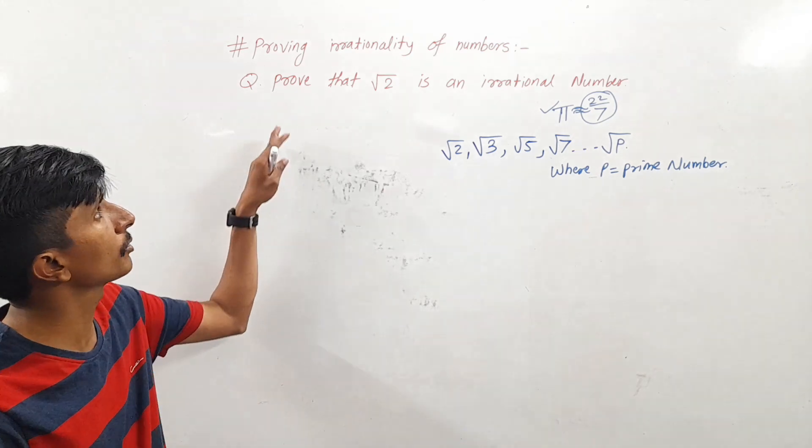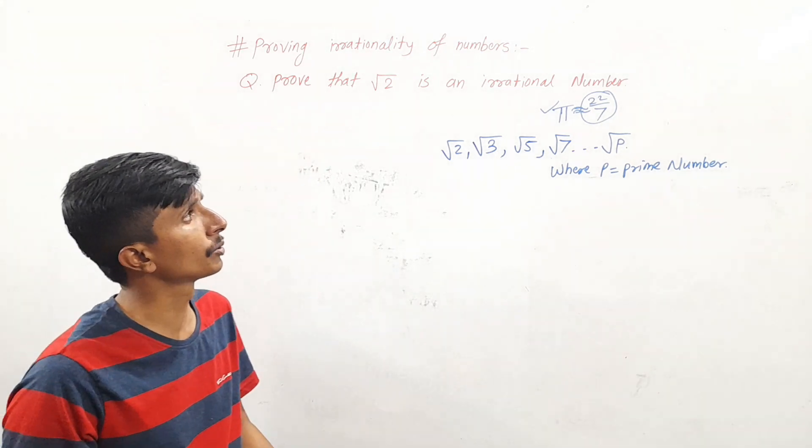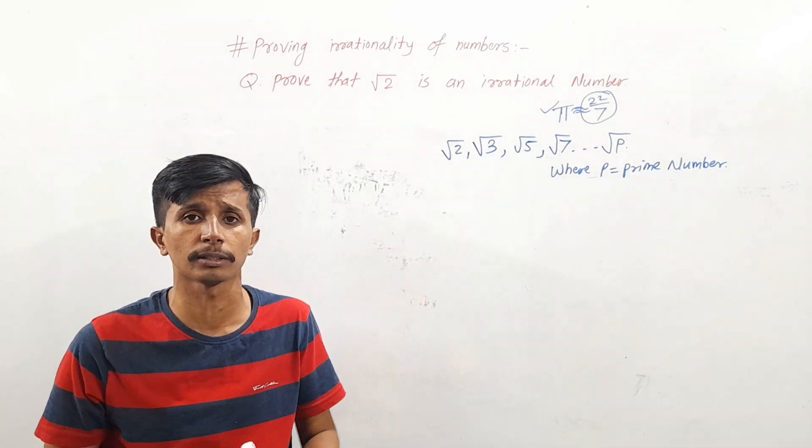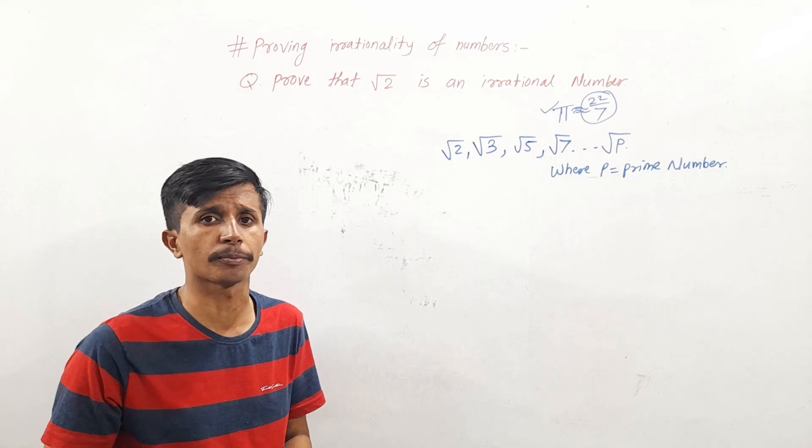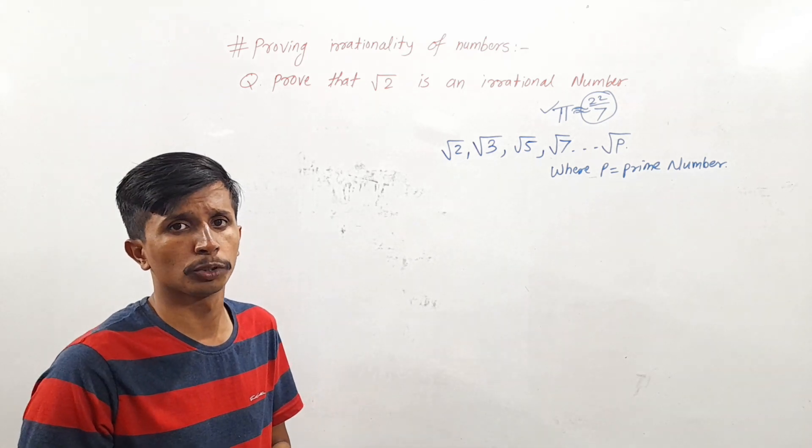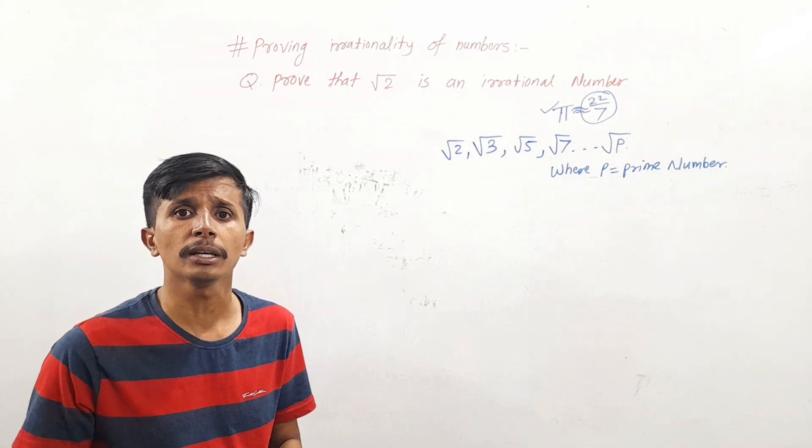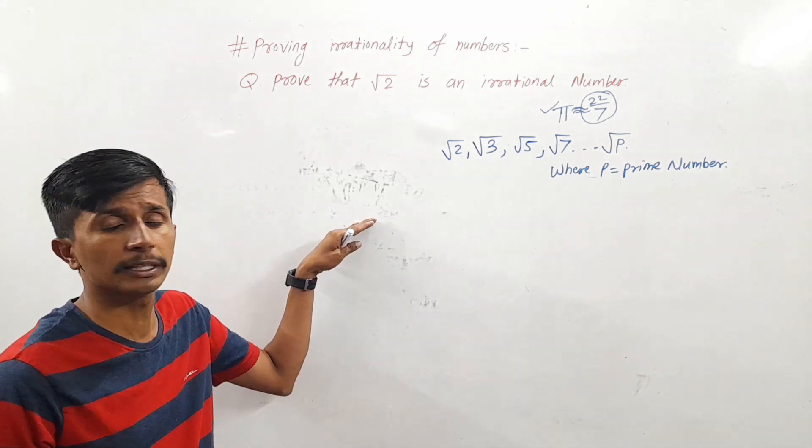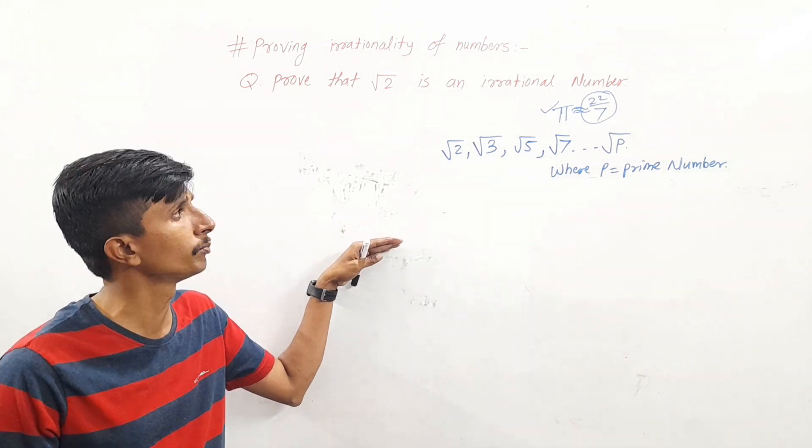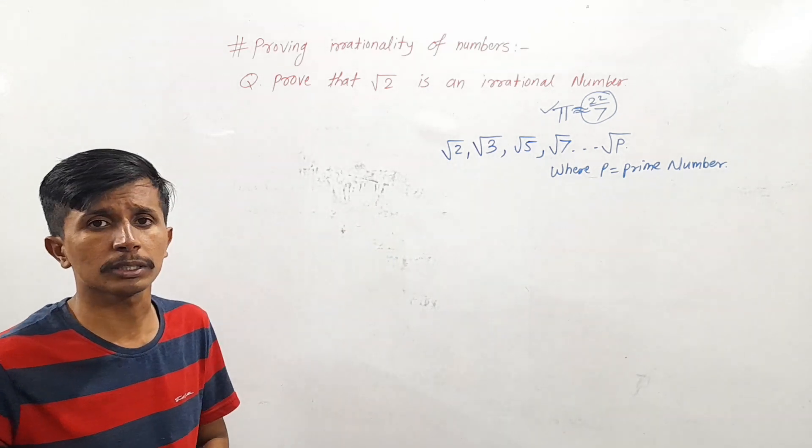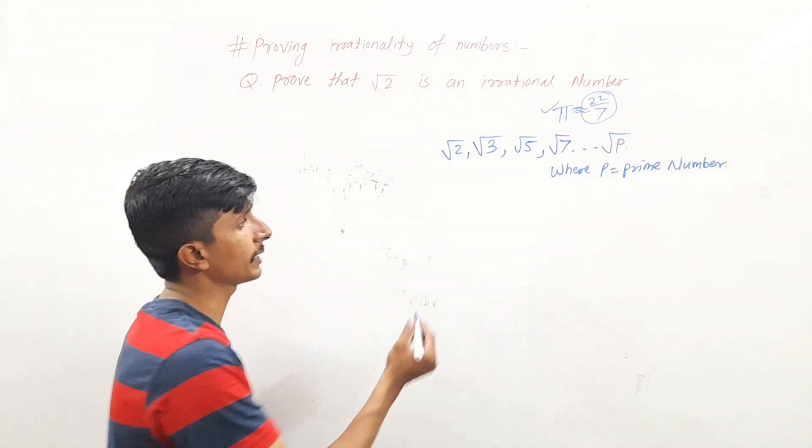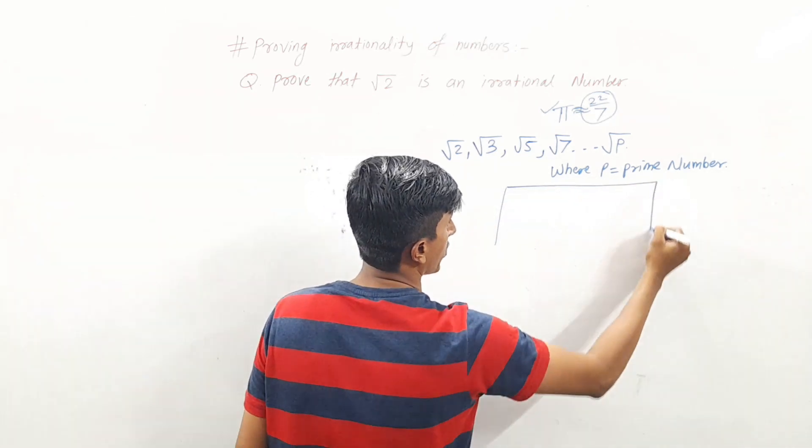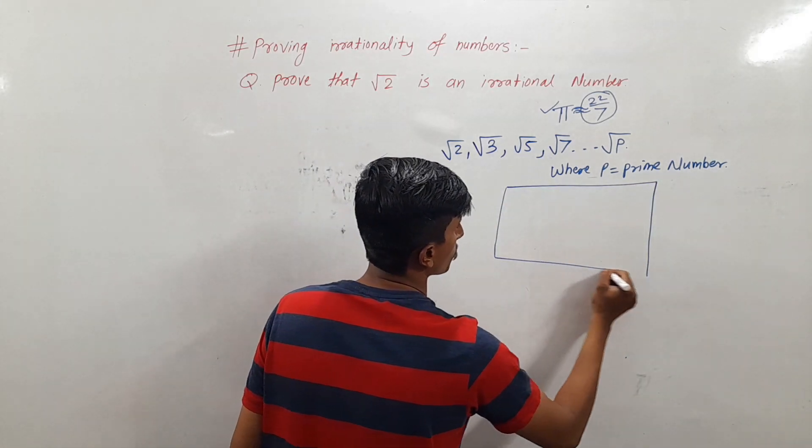Question mein puchenge prove that root 2 is an irrational number. Similarly, questions can be asked for root 3, root 5, root 7, etc. Because this point is deleted from syllabus, that's why we have discussed regarding this.